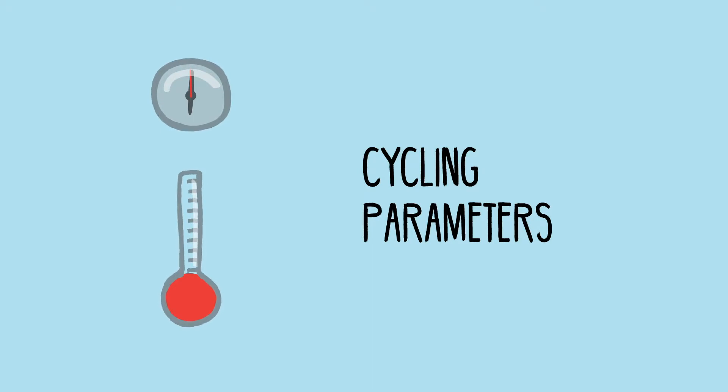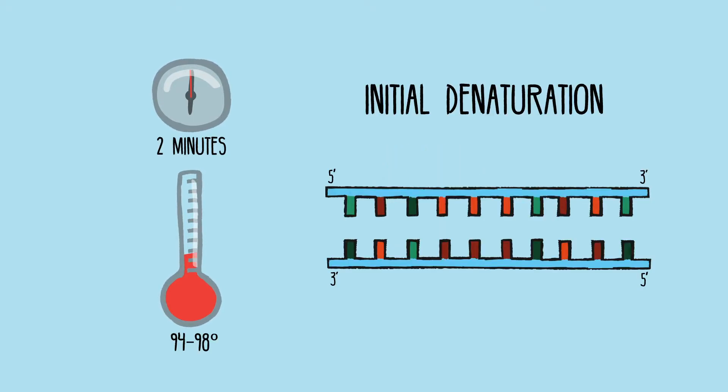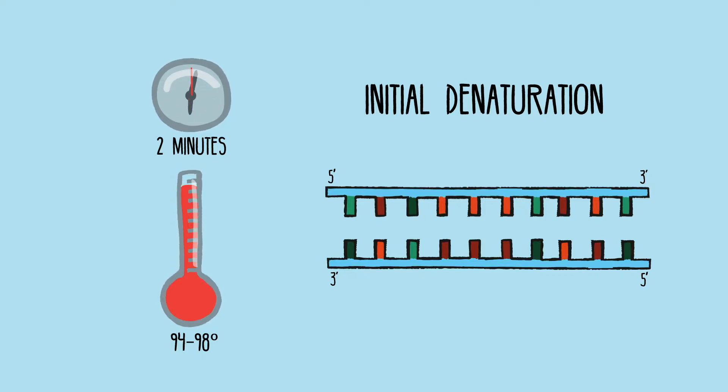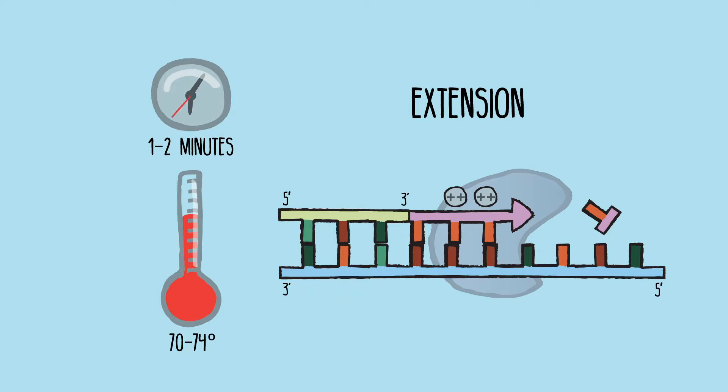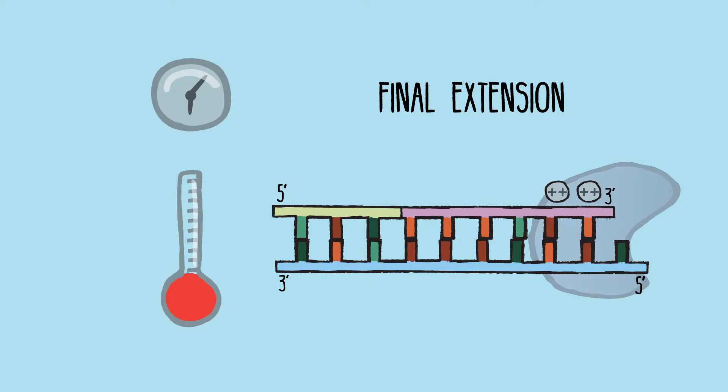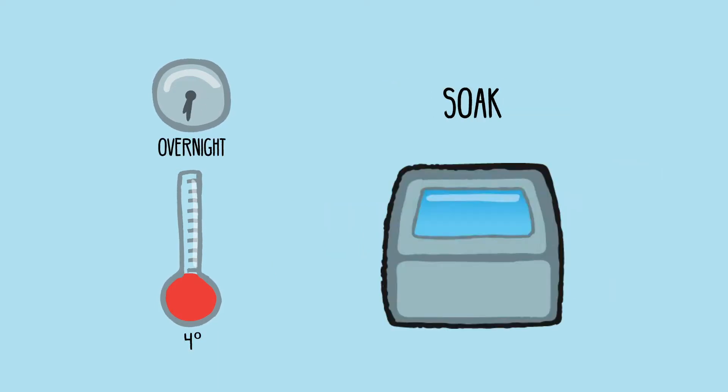PCR typically involves an initial DNA template denaturation step to separate the two strands, followed by repeated cycles of denaturation, primer annealing, and primer extension. This repeats for about 20 to 40 cycles, followed by a final extension, and ends with a hold or soak cycle for stable storage of the PCR product. Let's look at each step in detail.